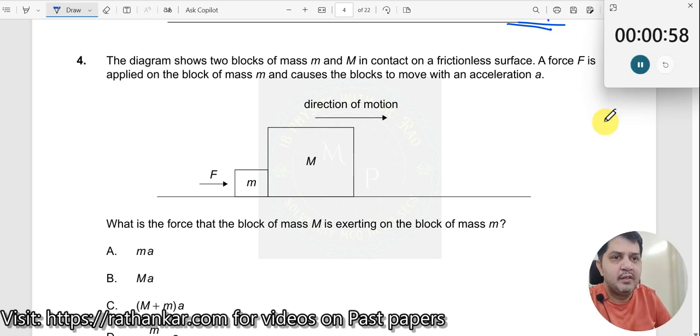Question number 4. The diagram shows two blocks of mass m and capital M in contact on a frictionless surface. Okay, no friction.